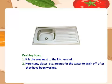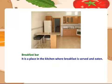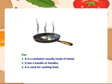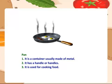Breakfast bar — it is a place in the kitchen where breakfast is served and eaten. Stool — it is a seat with legs. It doesn't have an armrest or backrest. Pan — it is a container usually made of metal. It has a handle or handles. It is used for cooking food.